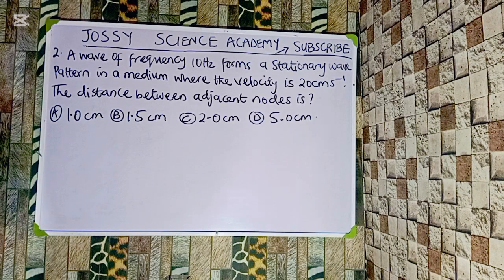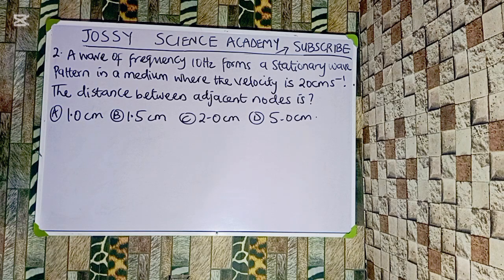A wave of frequency 10 hertz forms a stationary wave pattern in a medium where the velocity is 20 centimeters per second. The distance between adjacent nodes is what? Option A: 1.0 centimeters. Option B: 1.5 centimeters. Option C: 2.0 centimeters. Option D: 5.0 centimeters.